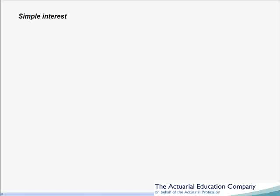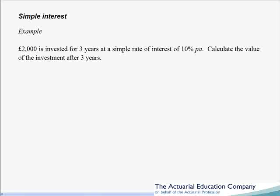First up let's take a look at simple interest. Simple interest is called simple because it does not earn interest on the interest. To show this, if we take £2000 and invest it for three years at a simple rate of interest of 10% per annum, we're going to calculate the value of the investment after three years.